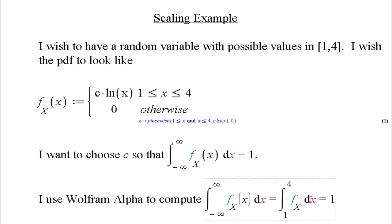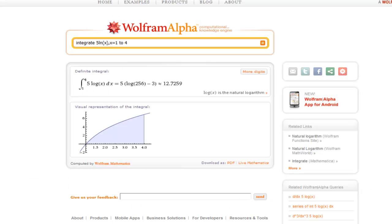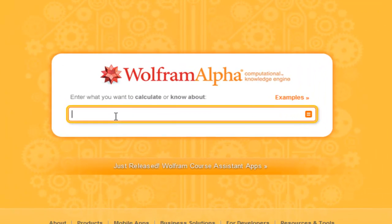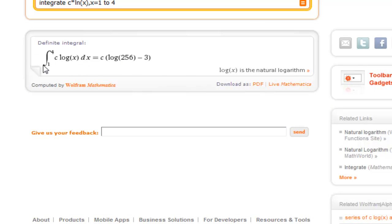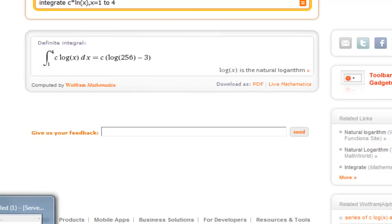On that interval, my PDF is c times the natural log of x. I'm going to do that using Wolfram Alpha. I want to integrate c times the natural log of x from x equals 1 to 4. I press Enter. It's not going to give me a number because I have that constant c. What it does do is it gives me a formula: c times the log of 256 minus 3.